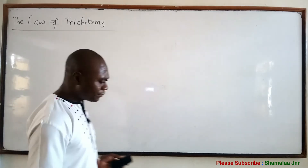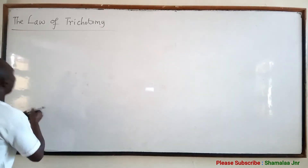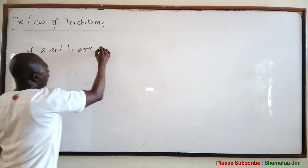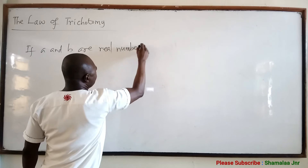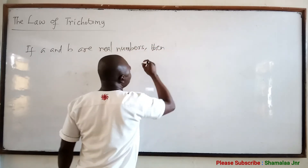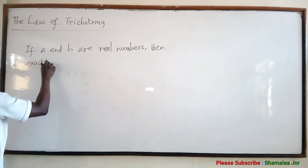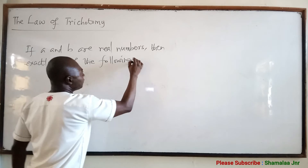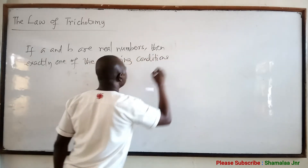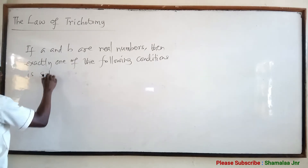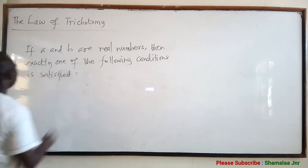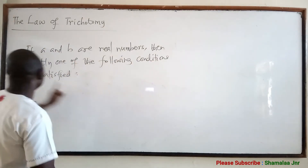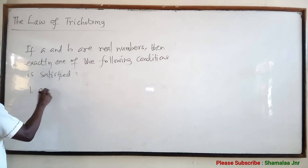The law of trichotomy states that if A and B are real numbers, then exactly one of the following conditions is satisfied. The first condition: A is equal to B.